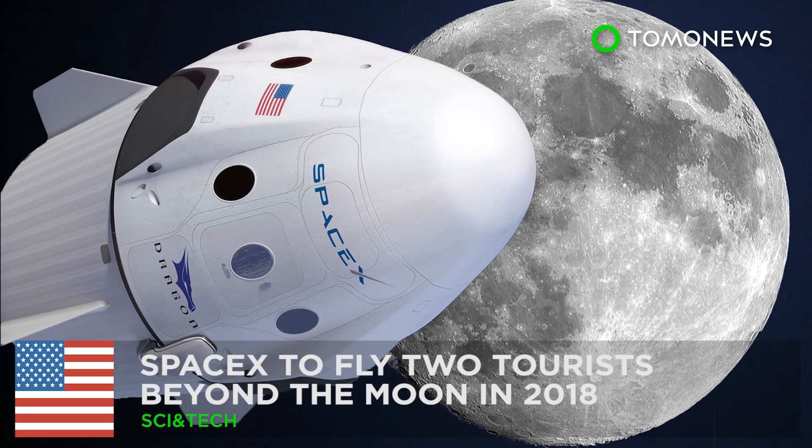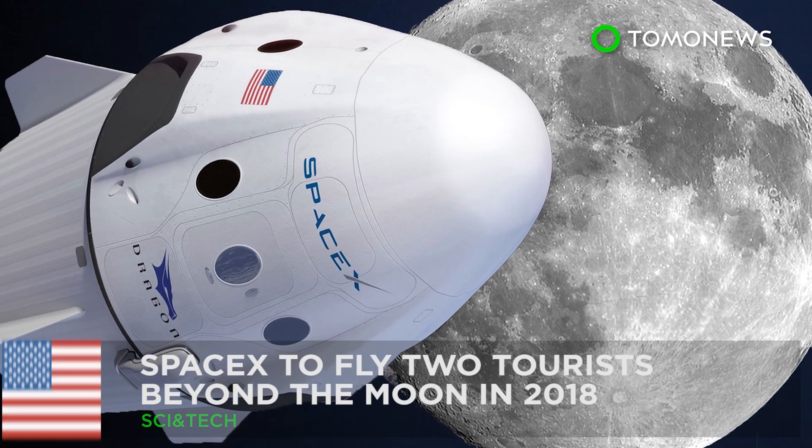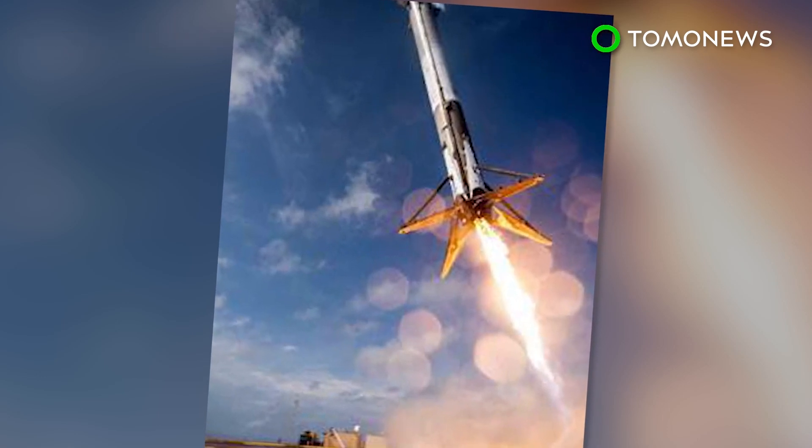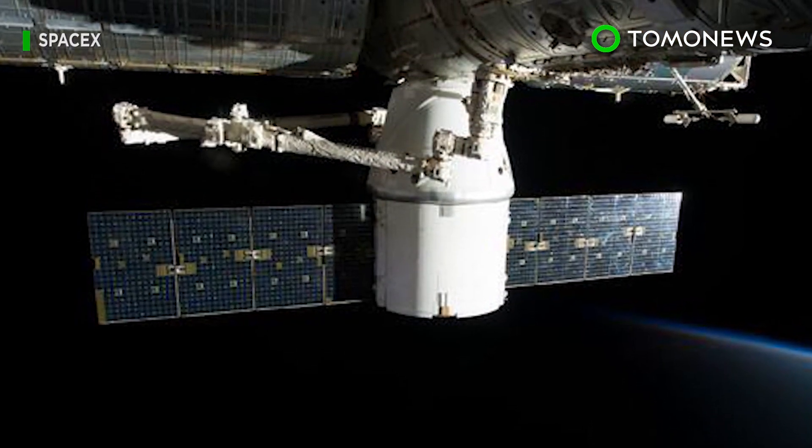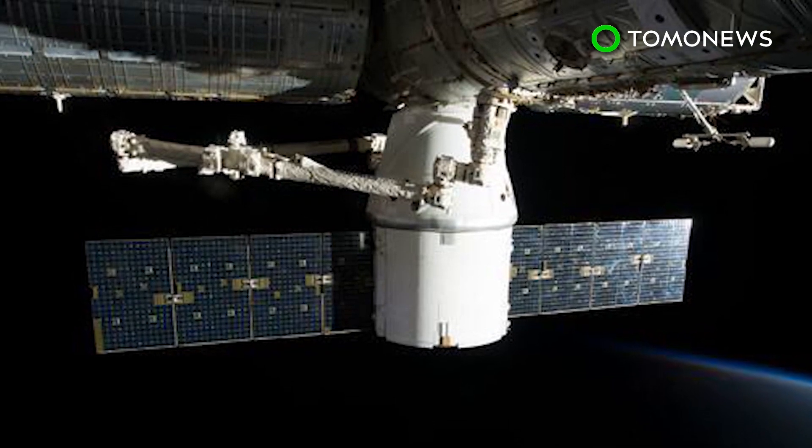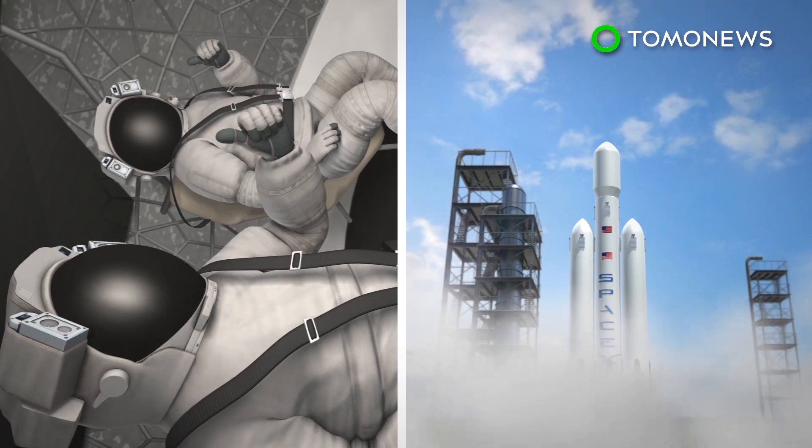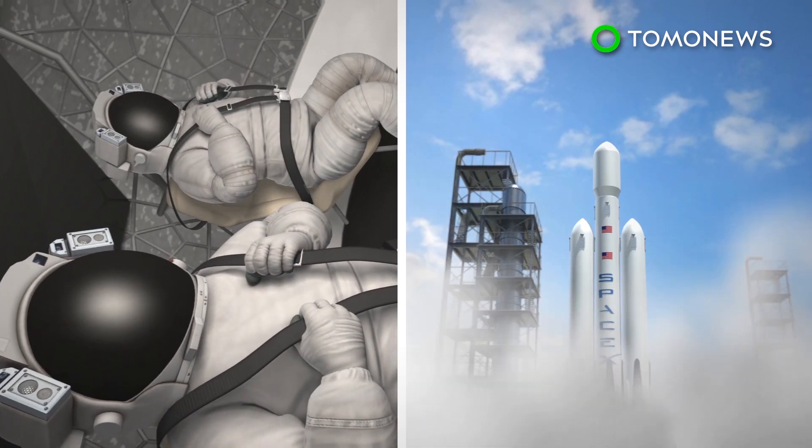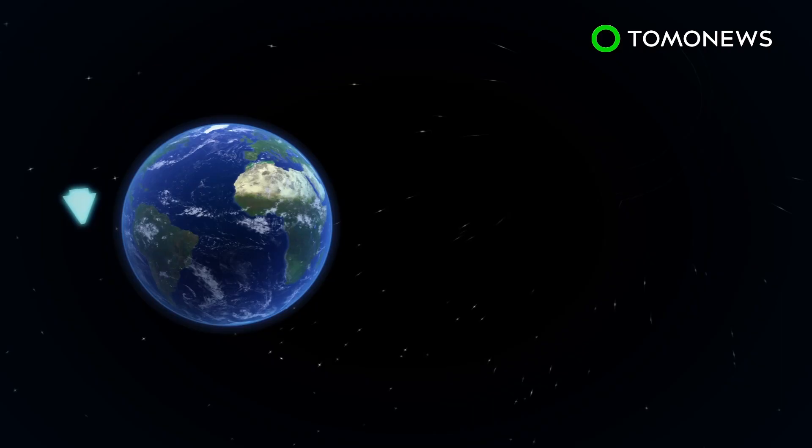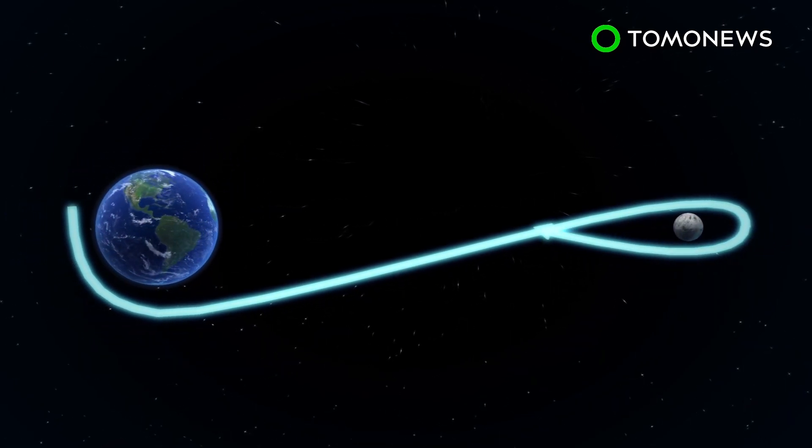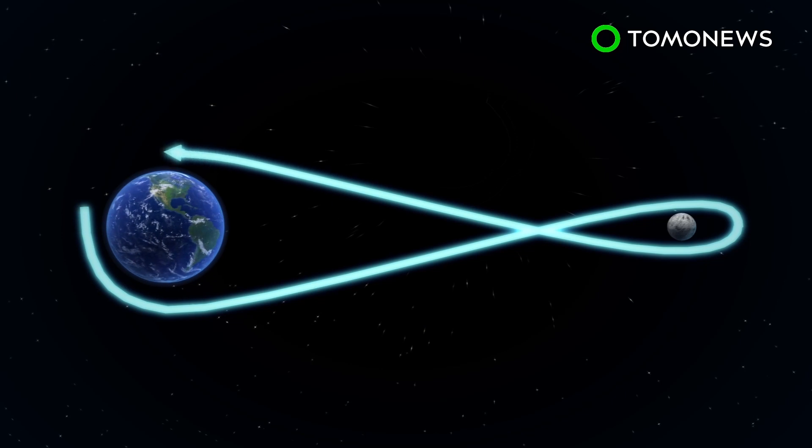SpaceX to fly two tourists around the Moon next year. This week, SpaceX announced bold plans to next year fly two paying passengers around the Moon using technology that's still in development. In 2018, SpaceX hopes to fly two private citizens deeper into space than any human has journeyed previously. The two travelers will trek some 400,000 miles around and beyond the Moon during the seven-day mission before looping back to Earth.